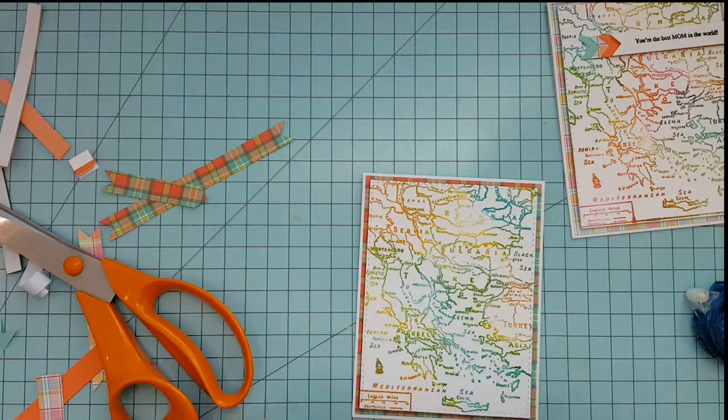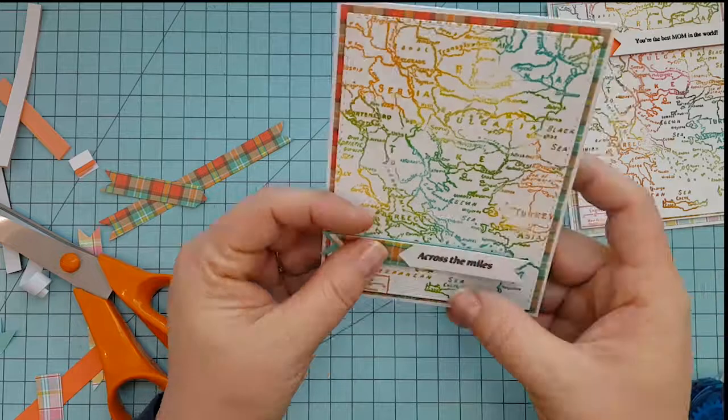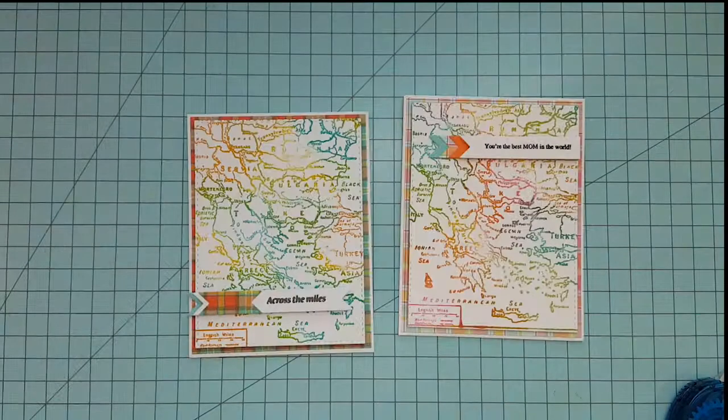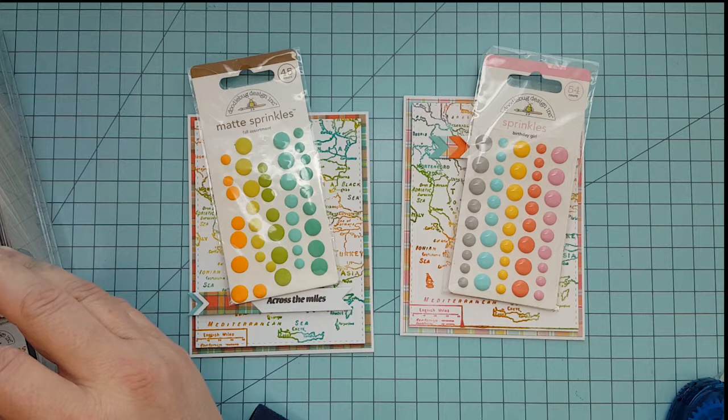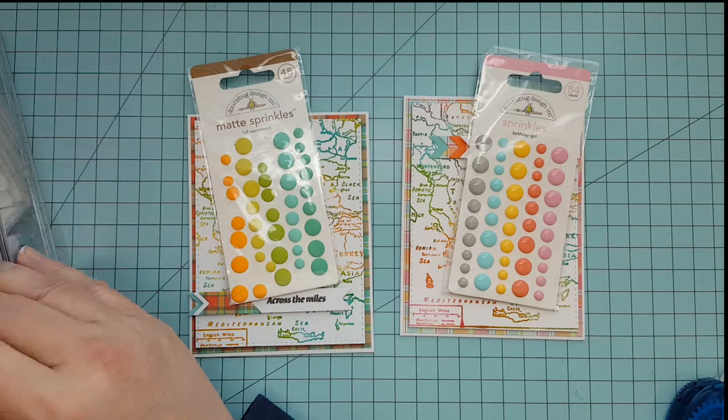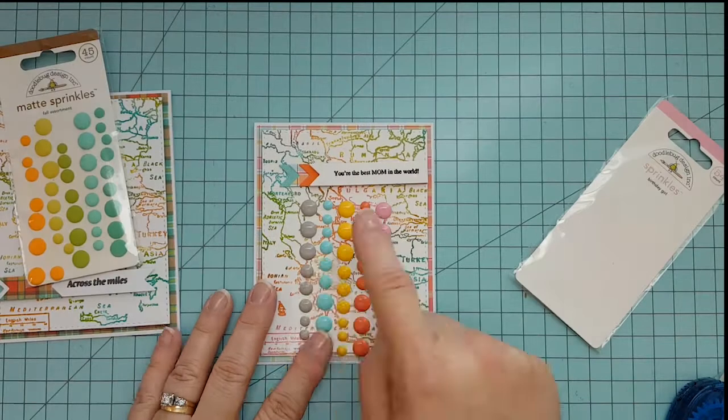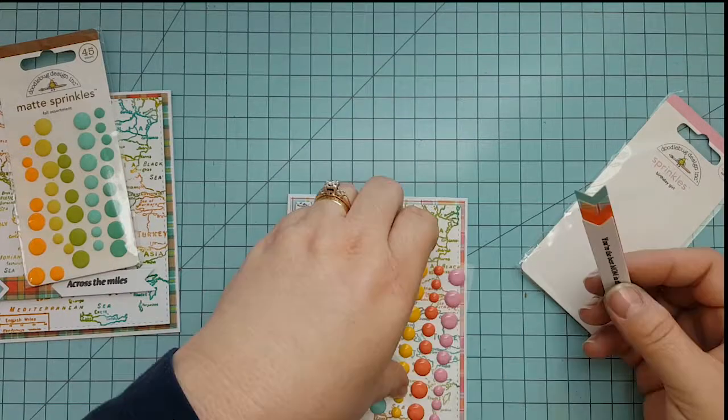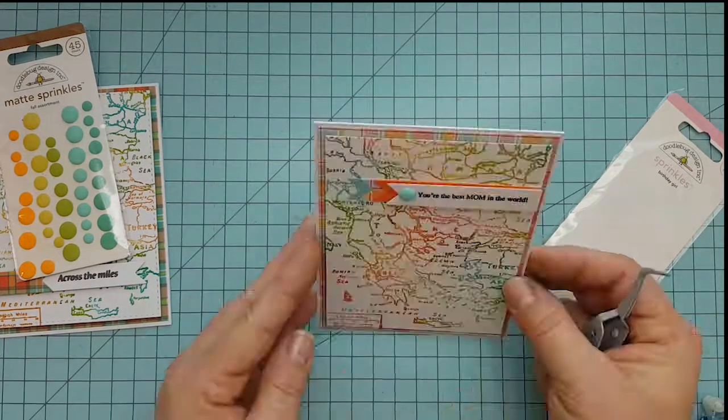And then we're going to add some enamel dots. And I'm going to use some turquoise enamel dots on the card on the left. And I use a light aqua and then pink and coral color on the card on the right. These are doodlebug sprinkles. And they're the birthday girl assortment and the fall assortment.